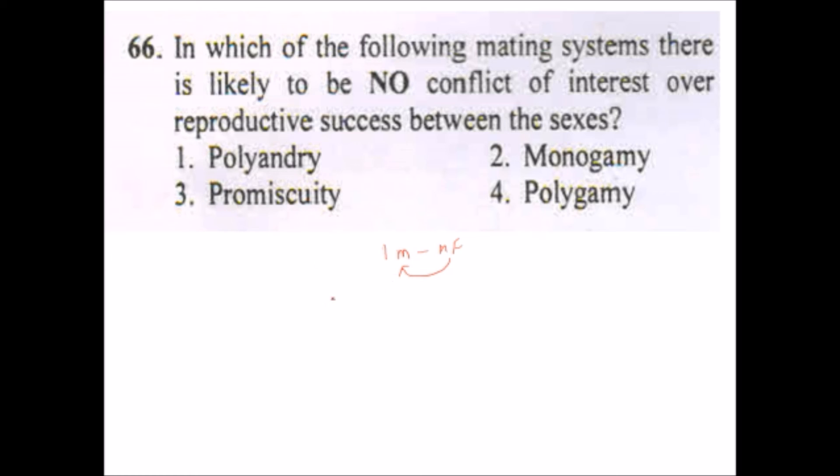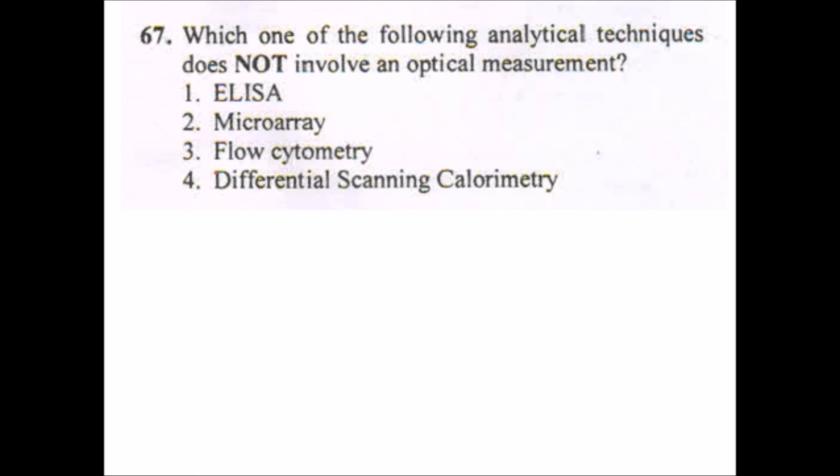Next question is: in which of the following mating systems there is likely to be no conflict of interest over reproductive success between the sexes? In all of these three there is one male, multiple females.